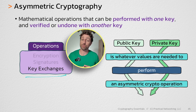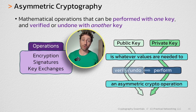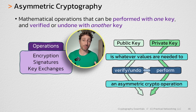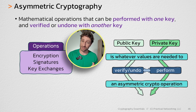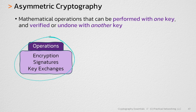For now, I just want to really drive home the point that with asymmetric cryptography, the key you use to perform or undo an operation is dependent upon the specific operation you're doing. Sometimes the public key does the operation and the private key undoes it, and sometimes it's the opposite.